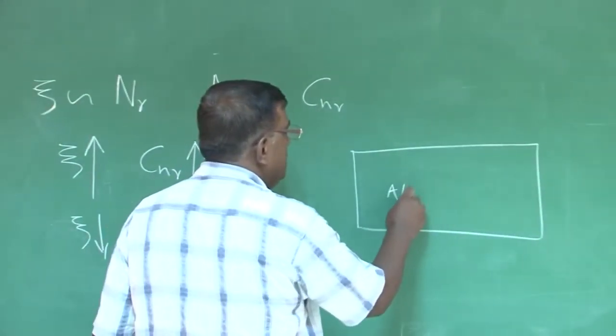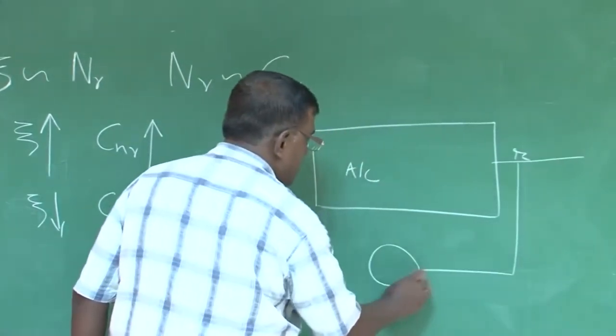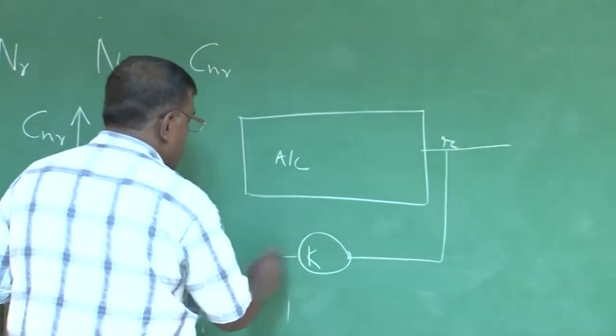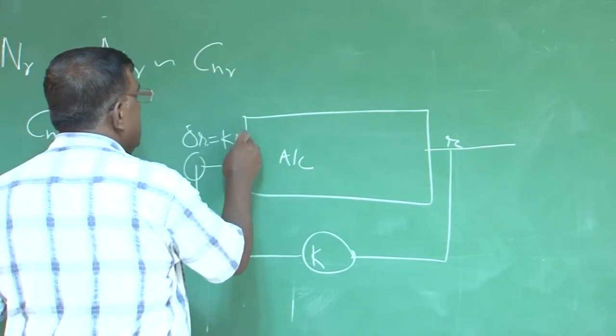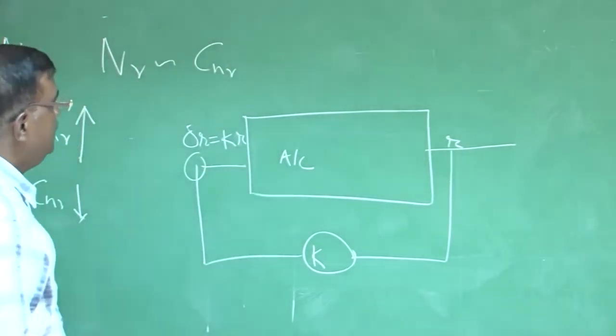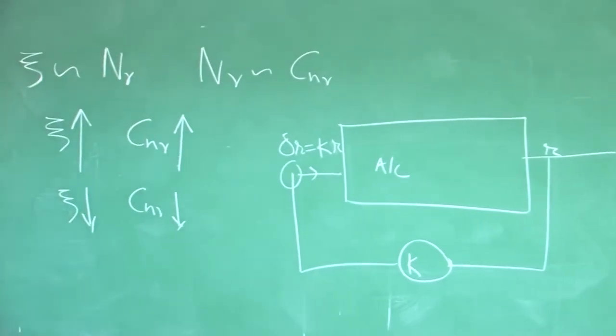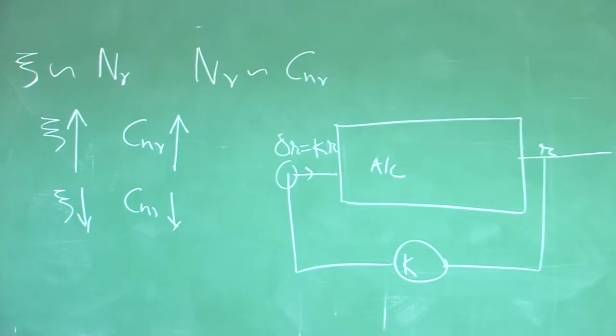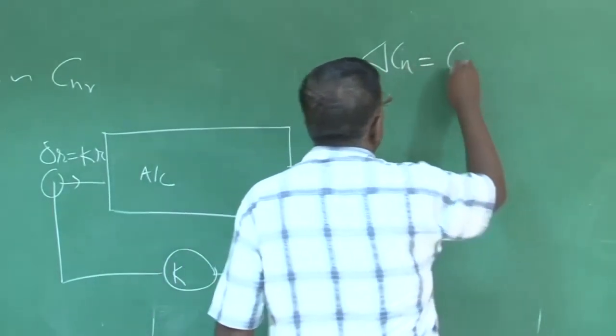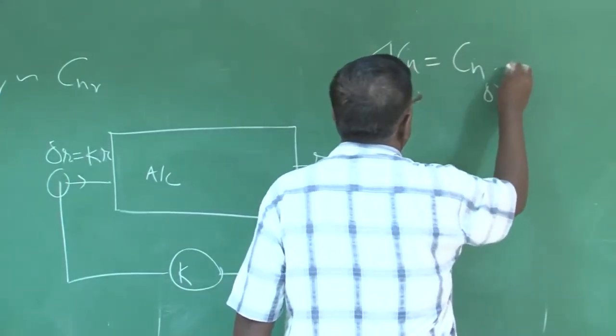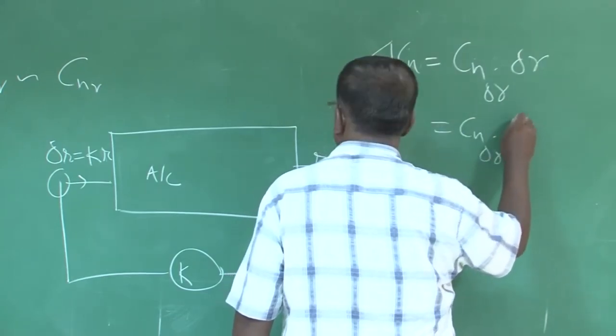So, what will be the approach? Again, approach is same. This is the aircraft. Now, you will be tapping r and again, you multiply with this and delta r you put as kr. Deflect delta r with, which is proportional to rate and how do you measure rate? You have rate gyro, you can measure this. So, the moment you do this,